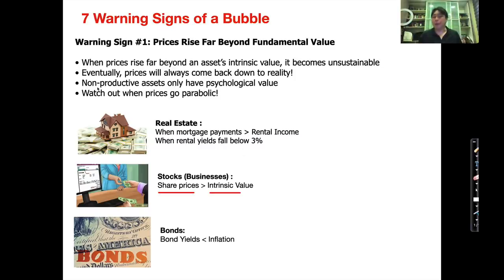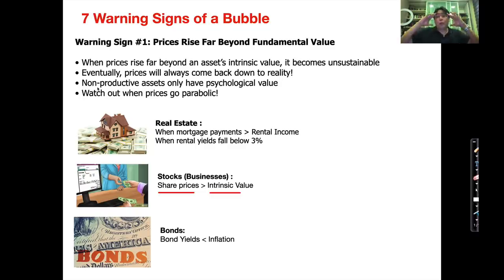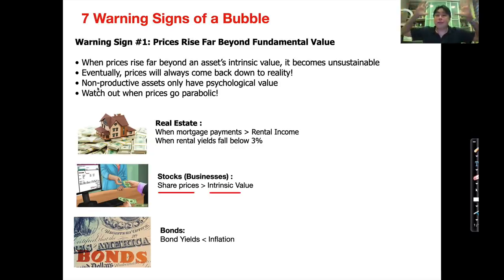When it comes to non-productive assets like gold or cryptocurrencies, it's really hard to value the fundamentals because the value is pretty psychological, and that makes it very dangerous. If people think Bitcoin is worth $50,000, sure, it's worth $50,000. If people believe Bitcoin is worth $100,000, it could go to $100,000. But if suddenly people start to say they think it's worth $5,000, it goes to $5,000. That's the danger with non-productive assets — they are worth what people think they're worth.